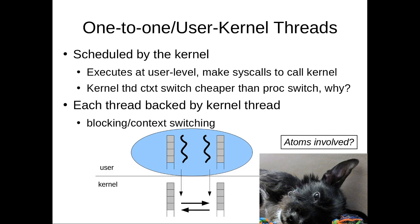There are multiple ways to implement threads, and we're going to go through three different types. The one you're most familiar with is called one-to-one, or user-kernel threads. These are execution as normal as we've been talking about. They need to be scheduled by the kernel, which means switching between them is performed by the kernel. They execute at user level as per normal, and we can have multiple of these threads at user level. They can make system calls to the kernel.